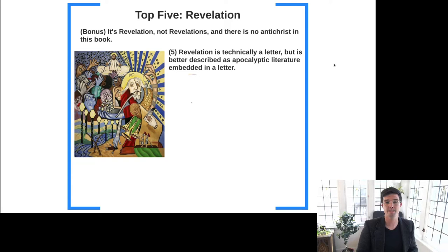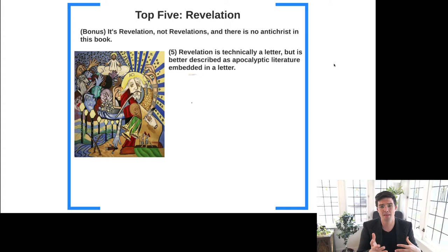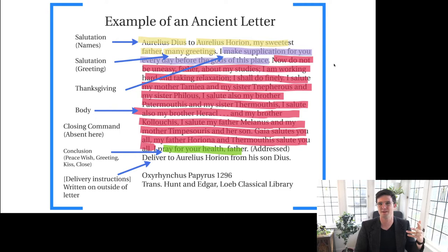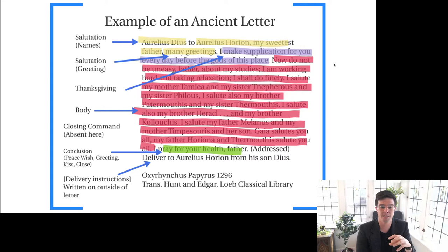Number five: Revelation is technically speaking a letter as to its form, but it's better described as apocalyptic literature that is embedded in a letter. We've seen the elements of ancient letters many times: a salutation with the names of the letter sender and recipient, a greeting, often a thanksgiving, then the body — the main content — and then a conclusion.